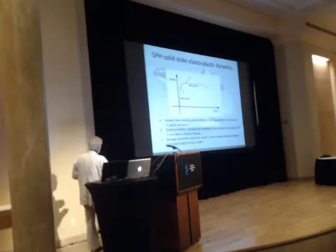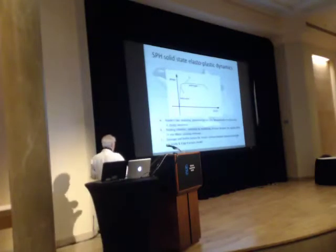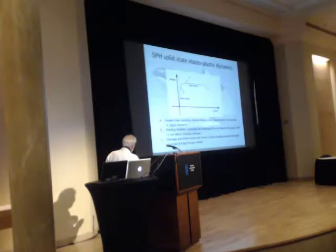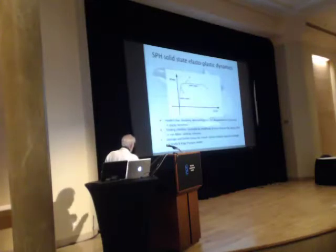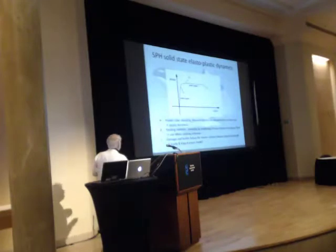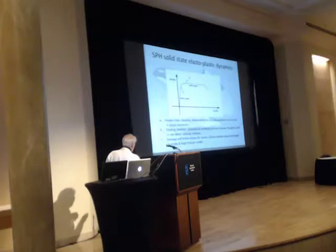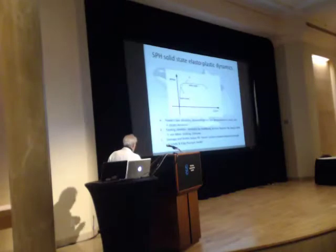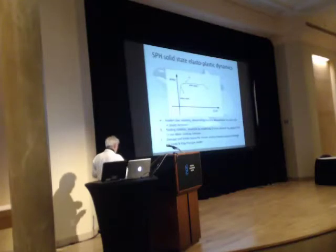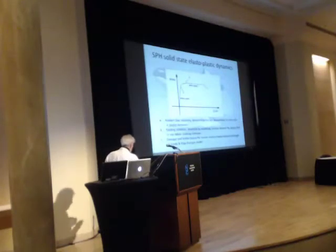This is the SPH for solid-state elastoplastic dynamics. As you should have learned in physics, there are three domains: the elastic domain where Hooke's law can be applied, then the plastic region, and then from a certain moment everything breaks — this is the damage and brittle failure for stress beyond material strength. We use one model for the plastic region and another for the brittle failure region.